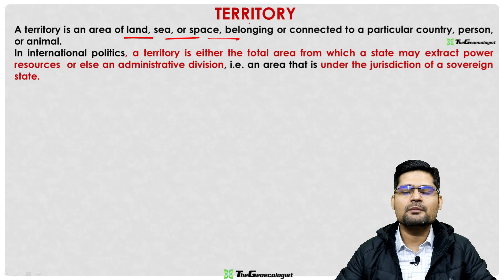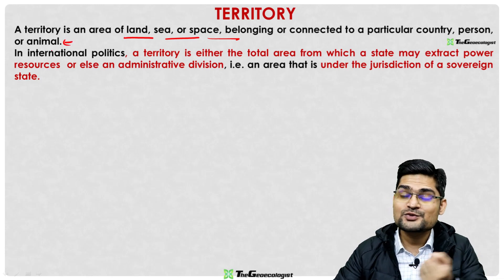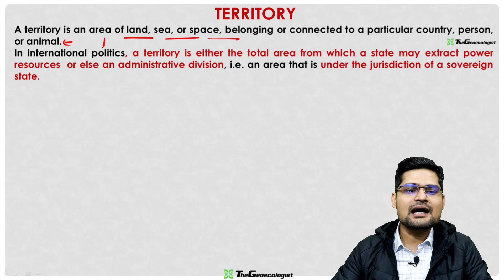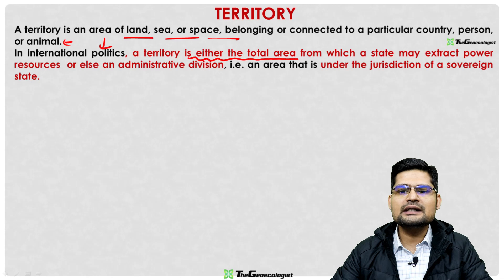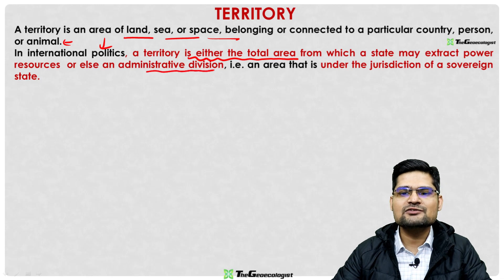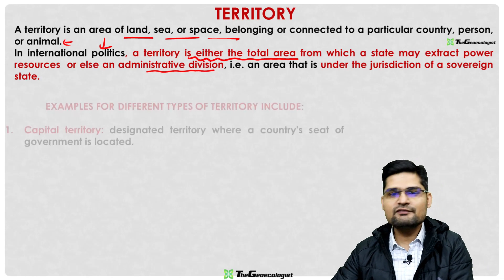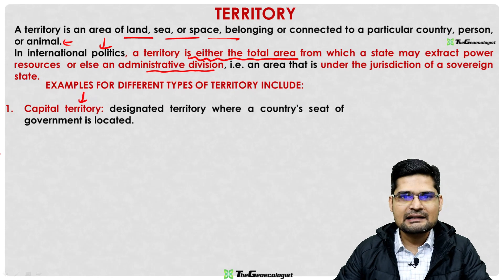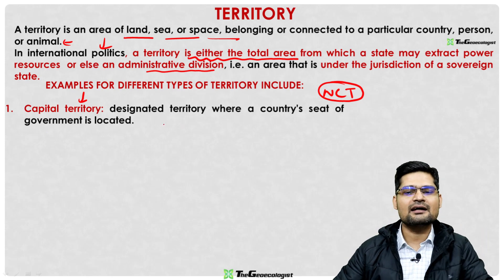Territory is basically the aerial coverage — land, sea, or space — belonging to a particular country, or in ecology, to an animal or person. In international politics and geopolitics, a territory is the total area from which a state may extract power or resources and exercise administrative control, jurisdiction, and sovereignty. Types of territory include capital territory — a designated area where a country's government seat is located.